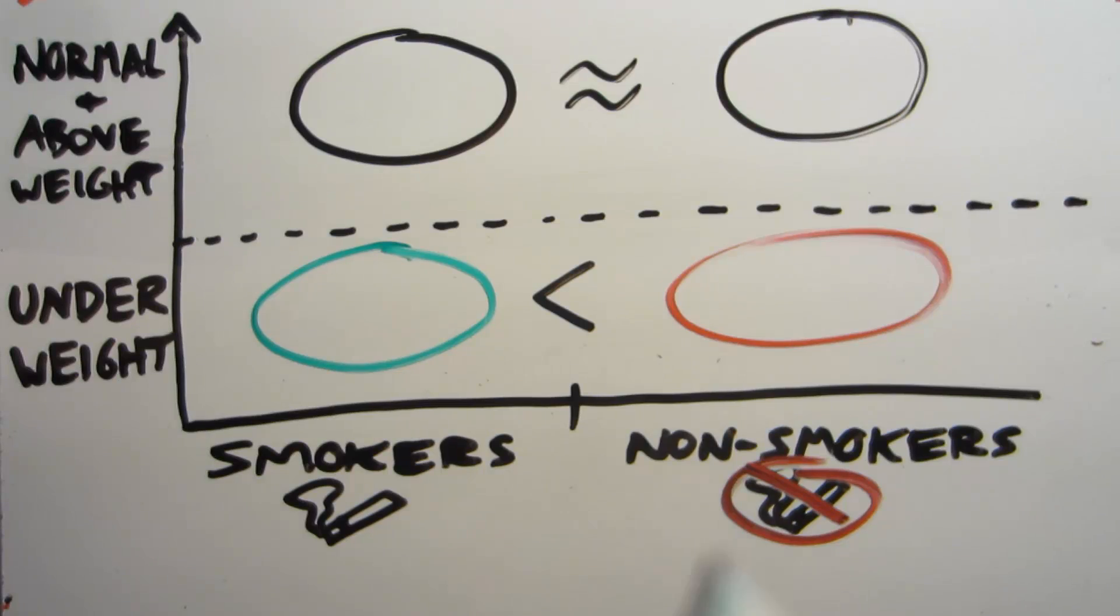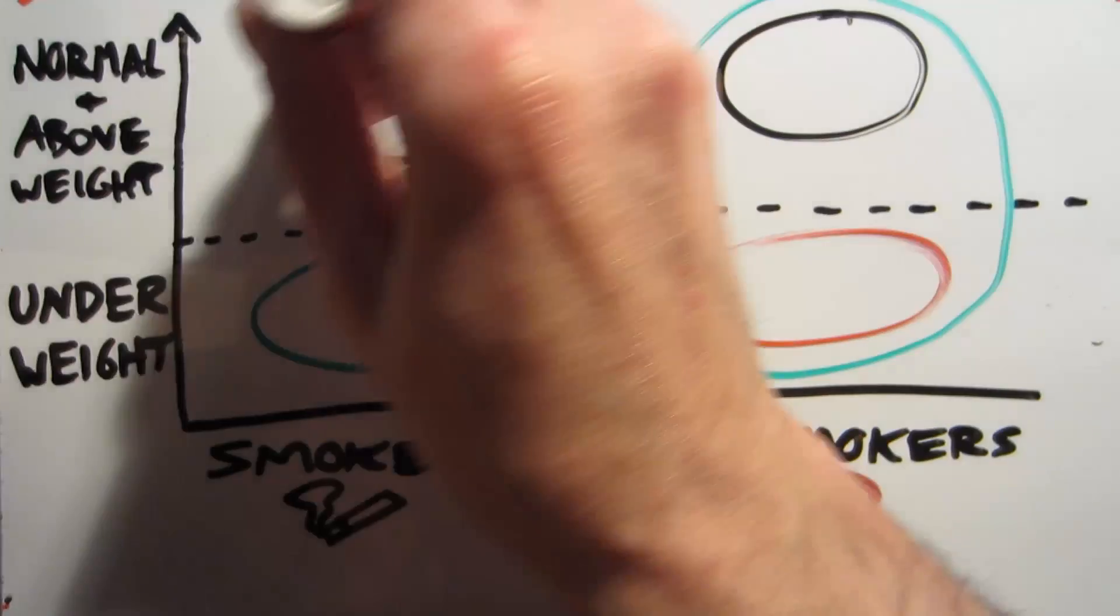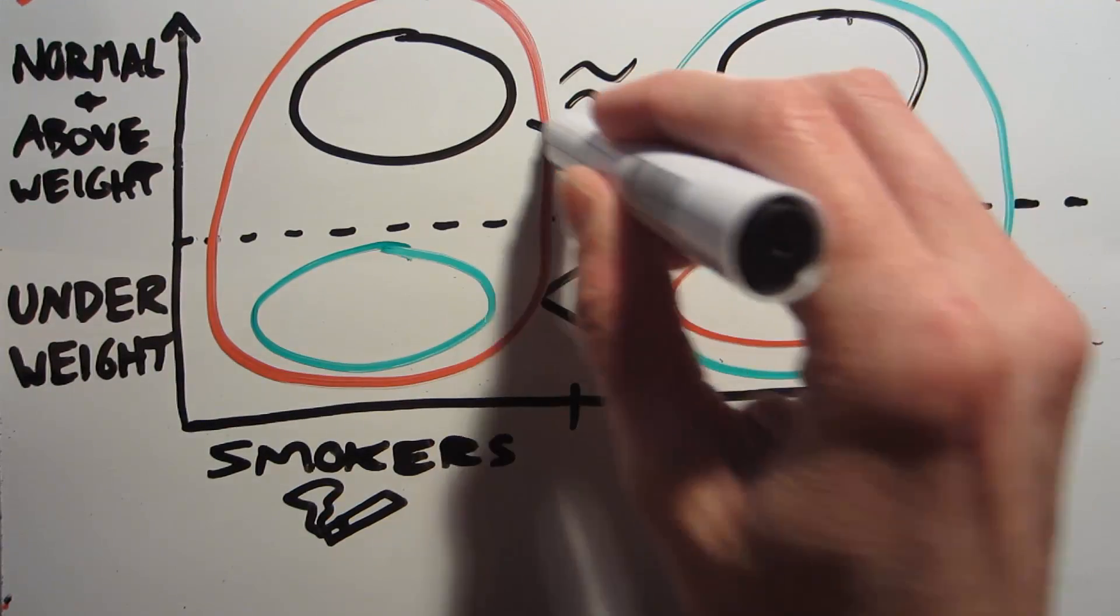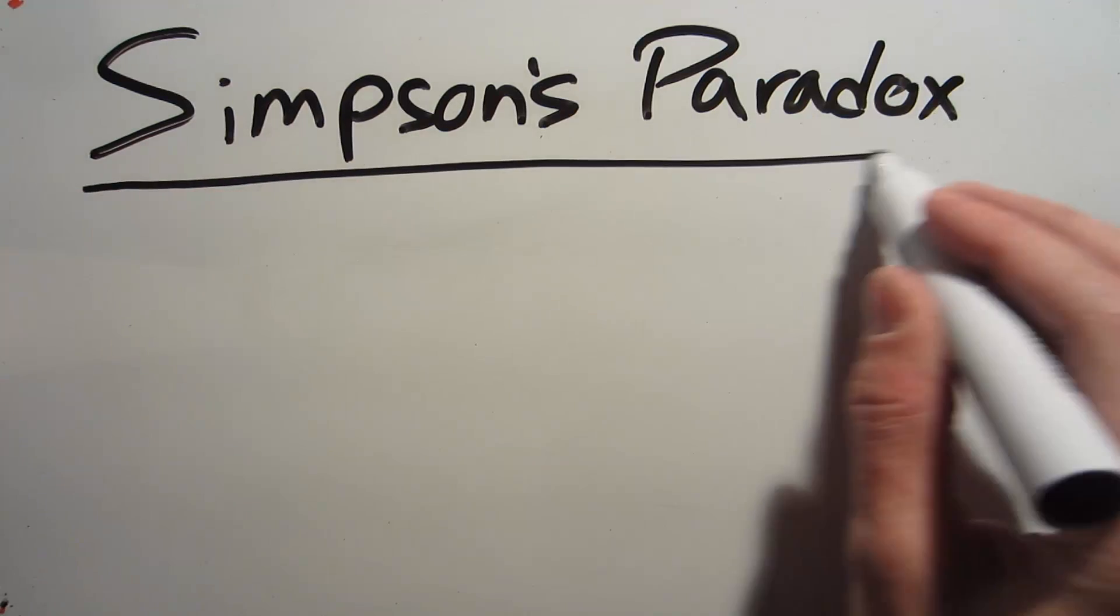But if you take all of these numbers together and you add up both underweight and non-underweight categories, you'll see that smokers babies have a much higher mortality rate than non-smokers babies. This situation is called Simpson's Paradox.